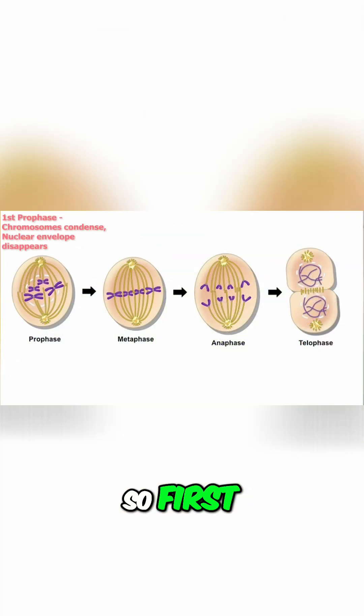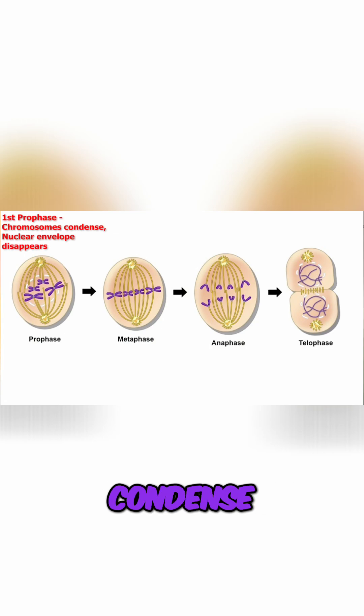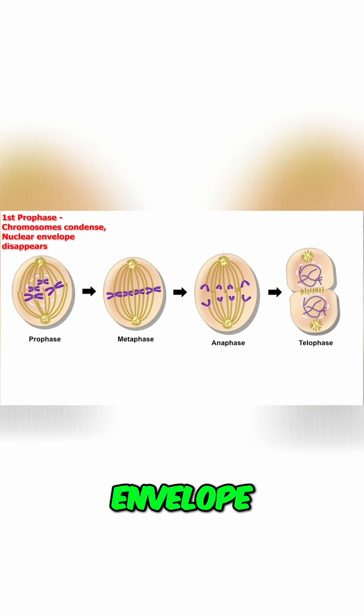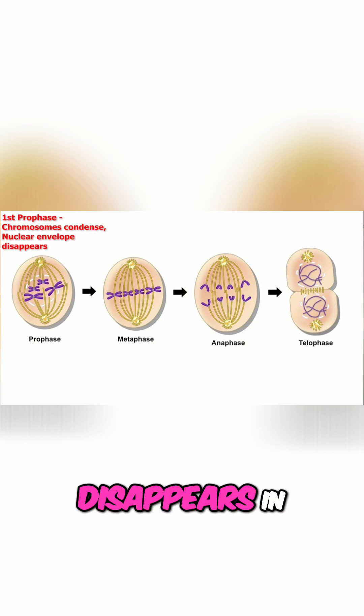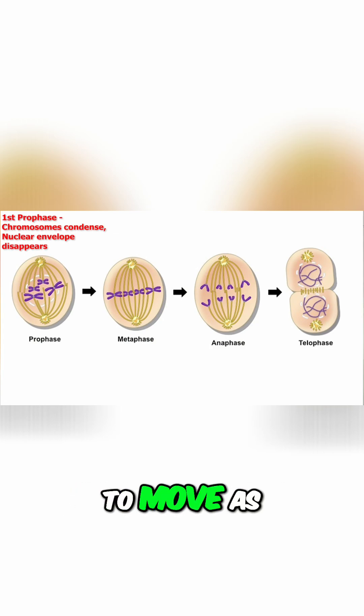First, in prophase the chromosomes condense and the nuclear envelope disappears in order for the chromosomes to be able to move as needed in the cell.